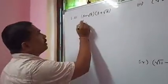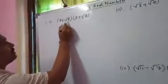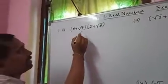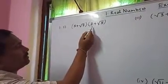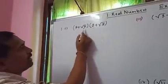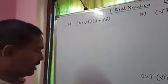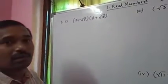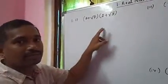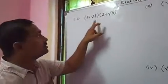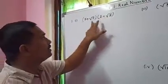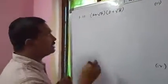See, we have 5 plus root 7 into 2 plus root 5. This is a multiplication — a product of two binomial expressions. We have already seen how to find the product of binomial expressions. This is a binomial with two terms, and here also a binomial. So how do we multiply this?